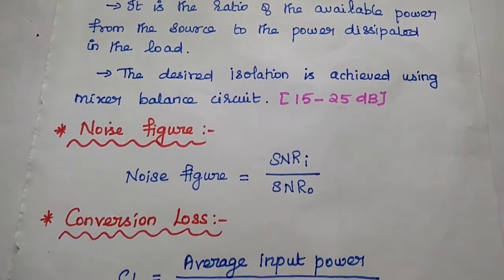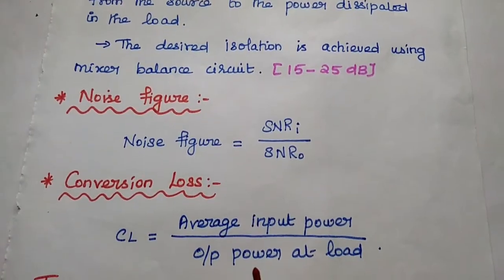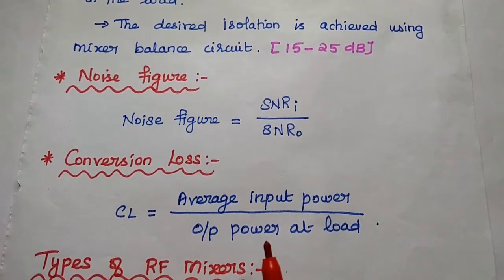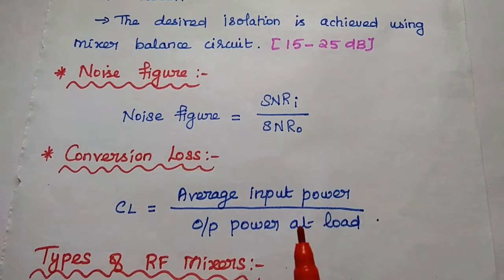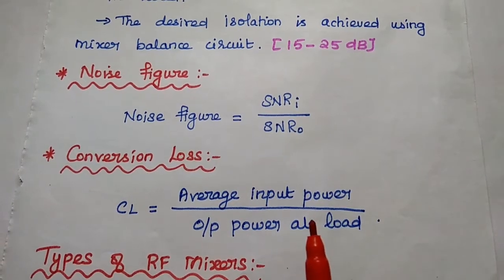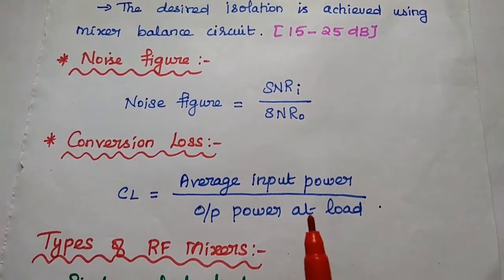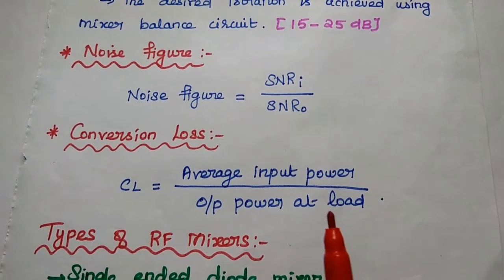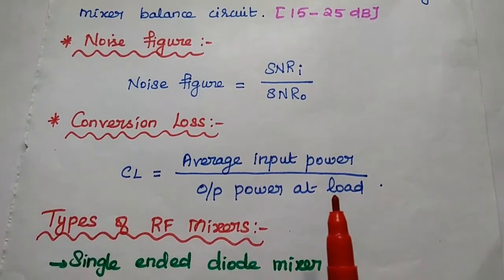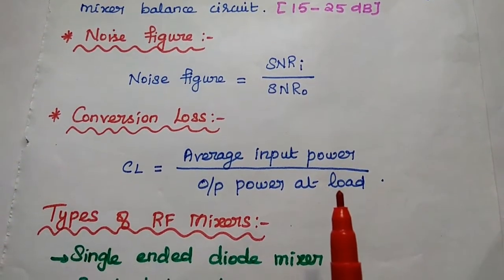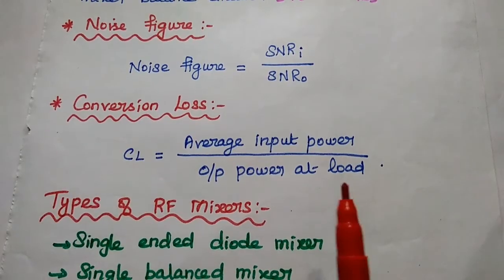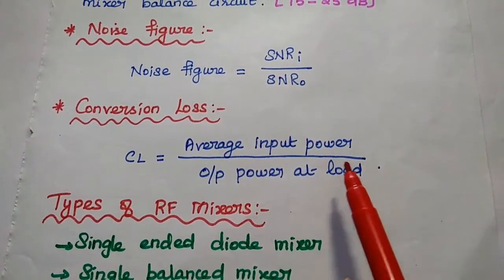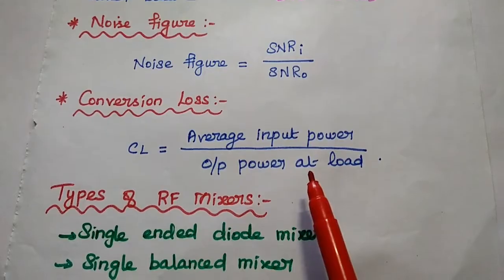Noise figure is the ratio of the input signal-to-noise ratio to the output signal-to-noise ratio. Conversion loss is the ratio of the average input power to the output power load, and it is simply inversely proportional to the conversion gain.